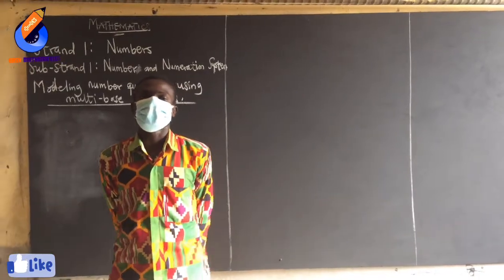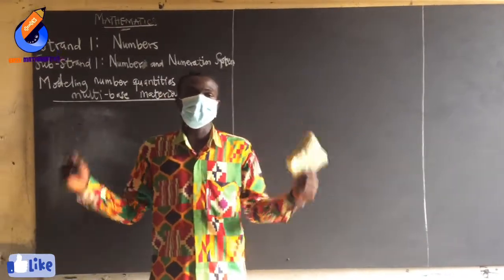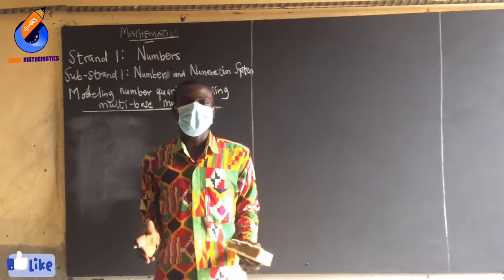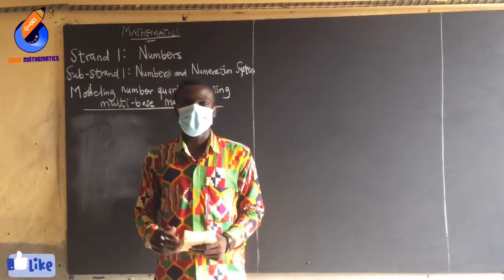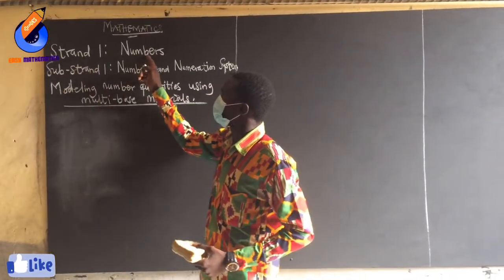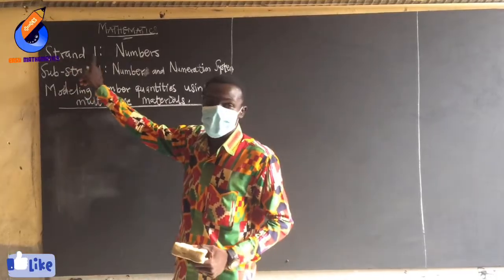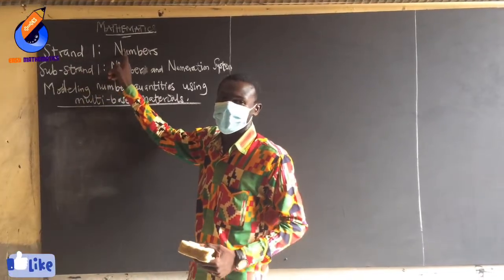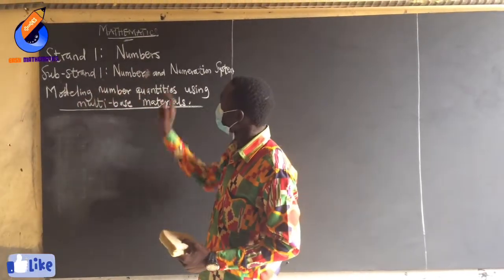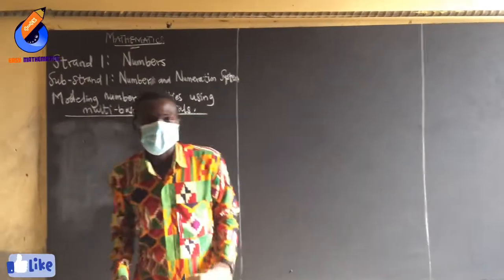Good afternoon fellow viewers. Today we want to start with the strands and substrands in Basic 7, that is Form 1. Strand 1 is numbers, and substrand 1 is the number and numeration system.